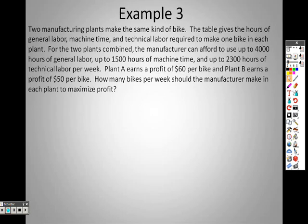So now two manufacturing plants make the same kind of bike. The table gives the hours of general labor, machine time, and technical labor required to make one bike in each plant. For the two plants combined, a manufacturer can afford to use up to 4,000 hours of general labor, 1,500 hours of machine time, and 2,300 hours of technical labor. Plant A earns a profit of $60 per bike, and plant B earns a profit of $50 per bike. How many bikes per week should a manufacturer make in each plant to maximize profit?